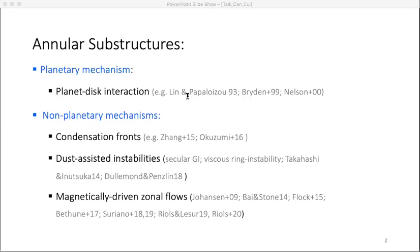The other category is planet-free, and these rings may potentially be the birthplace of planets. They could be further divided into a few subcategories, such as condensation fronts, which mark the transition of dust properties. There's also dust-assisted instabilities. And finally, the rings and gaps can be induced by magnetically-driven zonal flows, which is the focus of this talk.